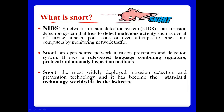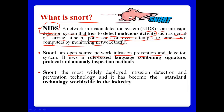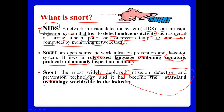So what is Snort? We can say Snort is a NIDS — an intelligent detection system that tries to detect malicious activities such as denial-of-service attacks like DoS, port scans, or even attempts to crack into systems by monitoring network traffic. Snort uses a rule-based language combining signatures — a kind of hacking patterns — and the protocol anomaly inspection method. Snort is the most widely deployed intrusion detection and prevention technology and has become the standard technology worldwide in the industry.